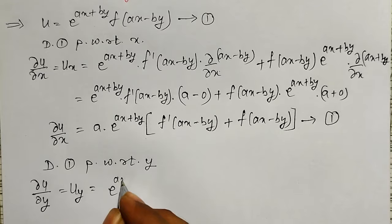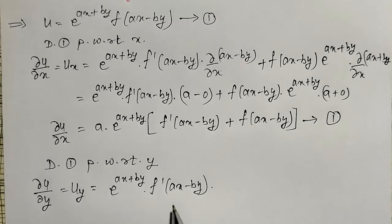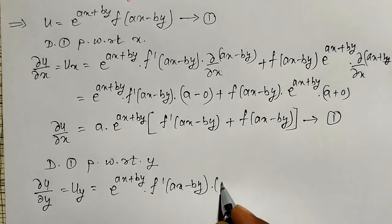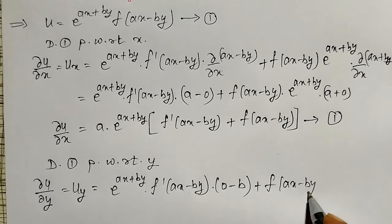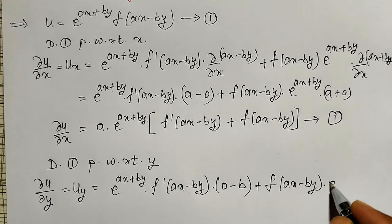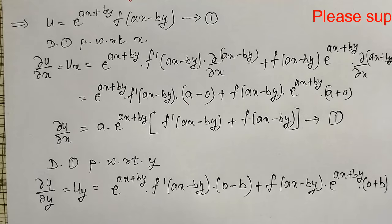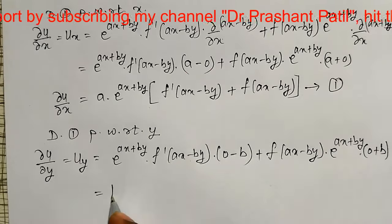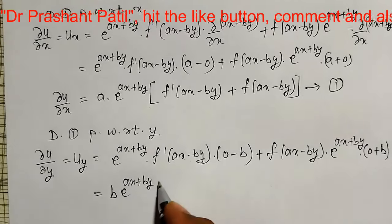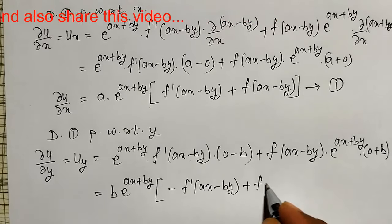That is, e raised to ax plus by into derivative of f of ax minus by will become f dash of ax minus by into derivative of ax minus by with respect to y, that will become 0 minus b — so minus b. Plus, next term: f of ax minus by as it is, into differentiation of e raised to ax plus by — e raised to ax plus by as it is because derivative of e^x is e^x — into ax plus by will give 0 plus b. From these two terms again, I can take b into e raised to ax plus by common. Therefore, ∂u/∂y equals b into e raised to ax plus by, multiplied by minus f dash of ax minus by plus f of ax minus by.